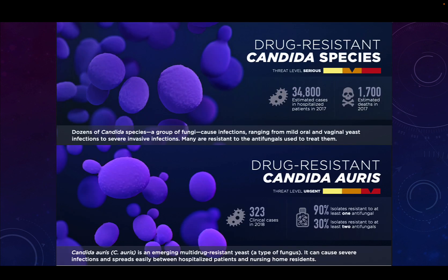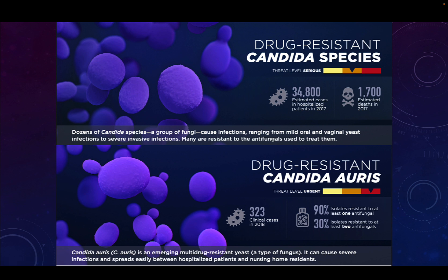Drug-resistant Candida species are included in the CDC threat document. In 2017, it was estimated that there were almost 35,000 patients hospitalized with a drug-resistant Candida infection, leading to approximately 1,700 deaths. In 2018 there were 323 clinical cases of Candida auris; by 2022 that was up to almost 3,000 clinical cases — nearly a tenfold increase in four years. This is considered an urgent threat. This organism wasn't even in the previous iteration of the CDC document — that's how new and dangerous it is. 90% of isolates are resistant to at least one antifungal, and 30% are resistant to at least two classes.